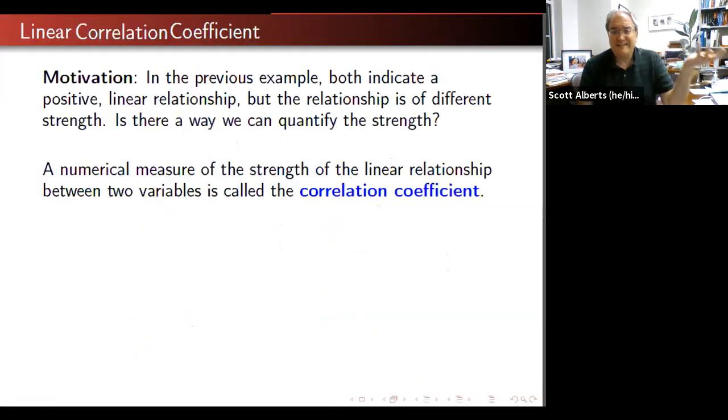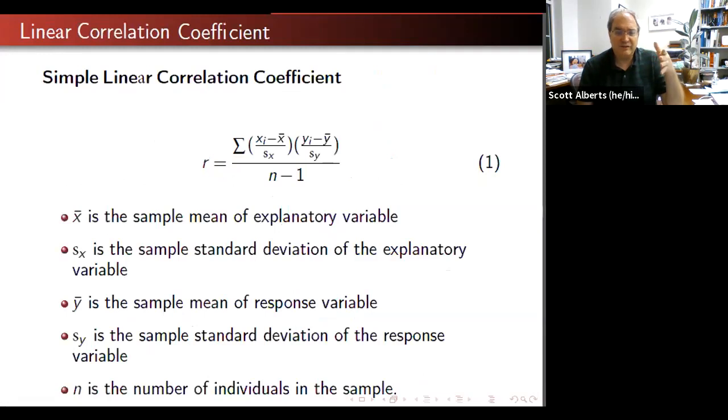So we could see that there was a strong relationship, but is there a way that we can assign a number to it to measure how good a relationship that is? How linear is it? We call this number the correlation coefficient. And here's the formula for it. And just like the formula for standard deviation, it's tedious, it's annoying, but it's not really hard to calculate.